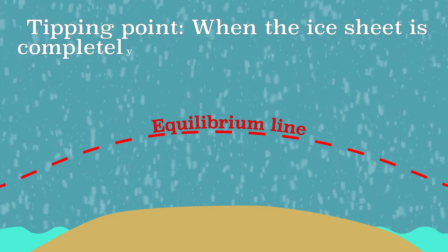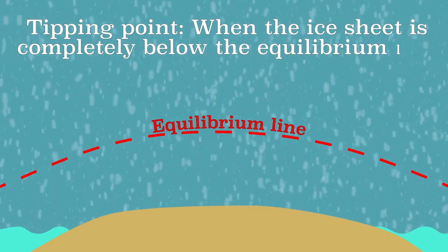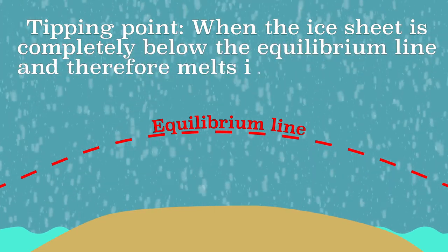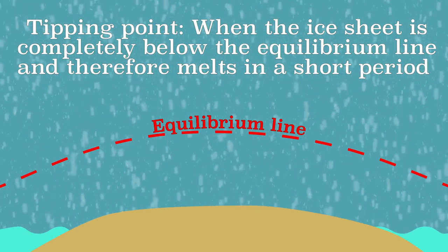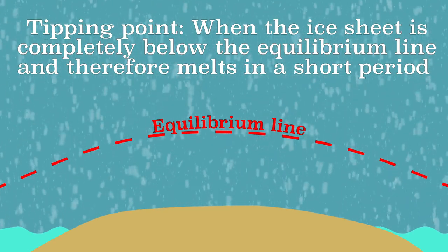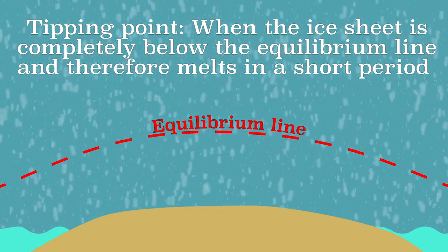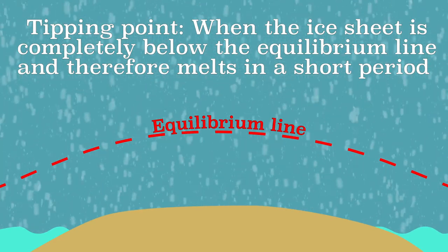This is called a tipping point. Then, due to the enhanced greenhouse effect, the temperature has risen so much that the ice sheet no longer grows and will melt completely in a short time. Whether this can happen with the Greenland ice sheet and whether this could happen within 1000 years is still being researched.